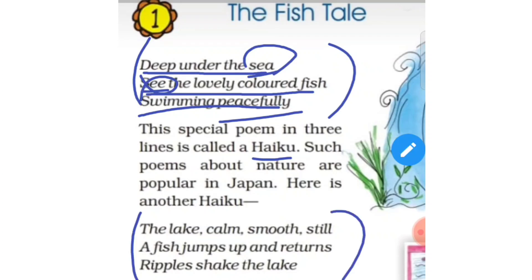Here is another three-line poem: 'The lake — calm, smooth, still. A fish jumps up and returns. Ripples shake the lake.' There is a condition of the lake — the lake is very silent. A fish jumps up and returns to its place. At that time, ripples shake the lake, meaning some waves will be formed.